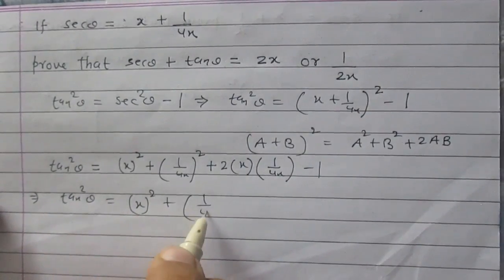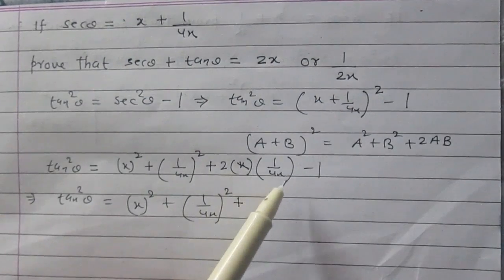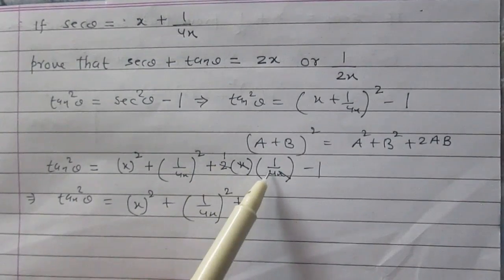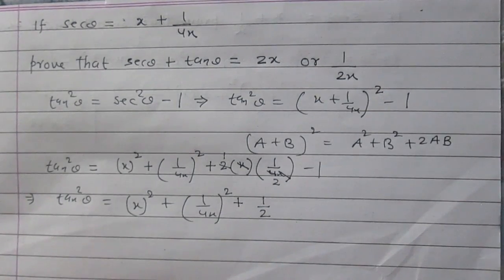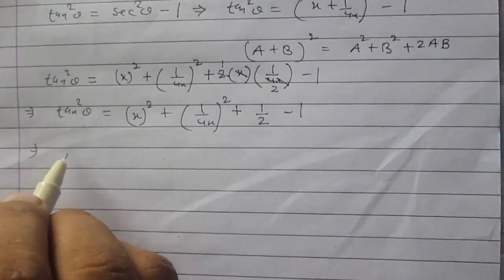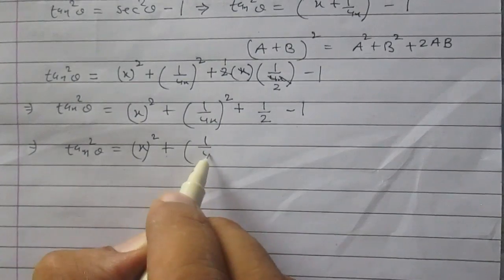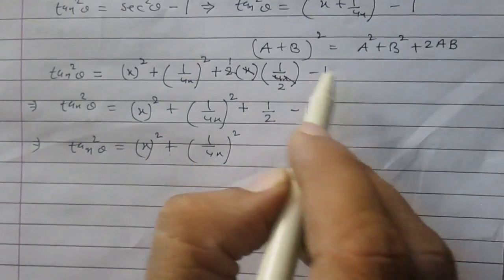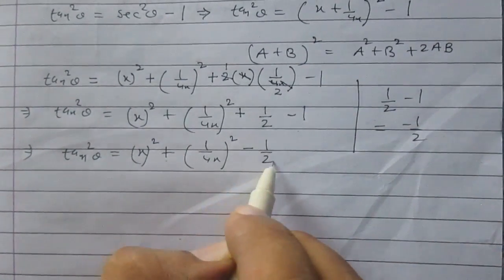We can simplify further: tan² θ is equal to x² plus square of 1 upon 4x, then plus — the x in the numerator cancels and 2 in the numerator cancels with 4 in the denominator, giving 1 by 2 — then minus 1. So we have x² plus 1 upon 16x², plus 1/2 minus 1, which gives minus 1 by 2.